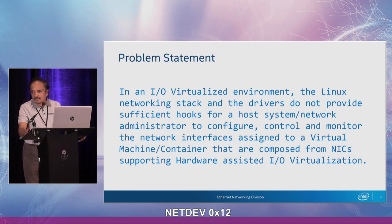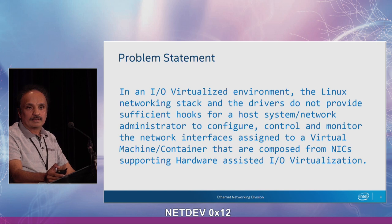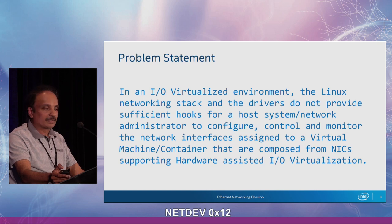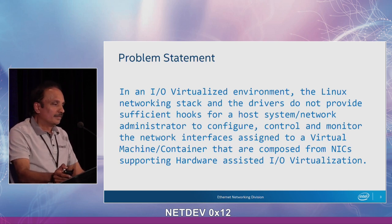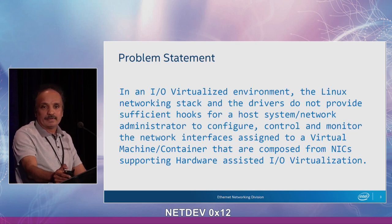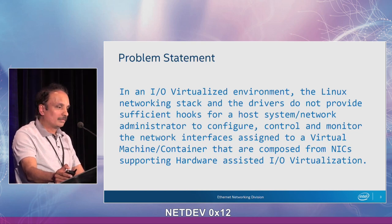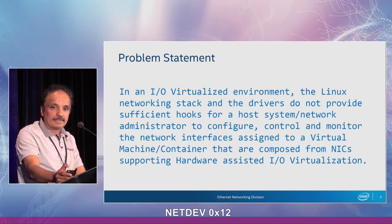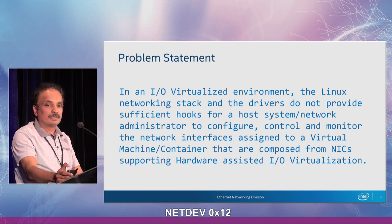So this is the problem statement. Basically, in an IO virtualized environment, the Linux networking stack and drivers do not provide sufficient hooks for a host system network administrator to configure, control, and monitor the network interfaces assigned to a virtual machine or a container that are composed from NICs supporting hardware-assisted IO virtualization. This becomes much more important in a cloud environment where a single NIC is virtualized and shared across multiple tenant VMs. The service provider would like to provide different levels of networking features and performance for different tenants and also possibly different VMs of the same tenant.